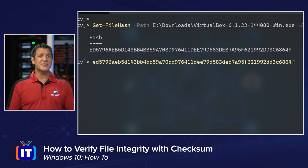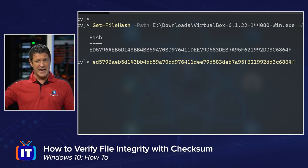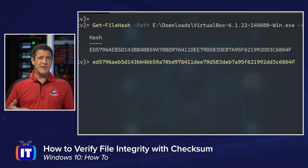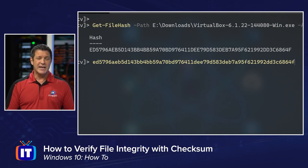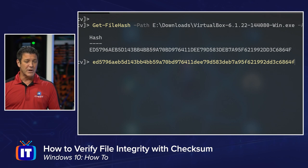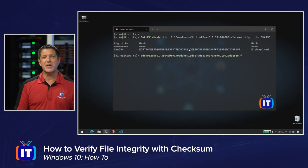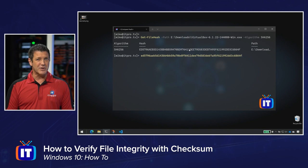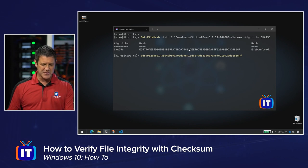There are third-party applications that you can use where you grab the hash value from the website, paste it into a box, run the program, tell it what you're trying to check, and it does the comparison for you. One of the cool things about this being a PowerShell command is that you can write your own script to do the comparison, and I've done that. Let's take a look at how that works.